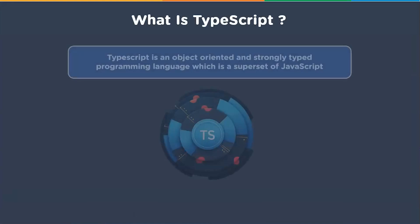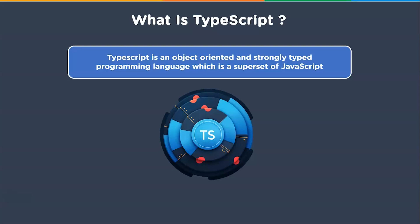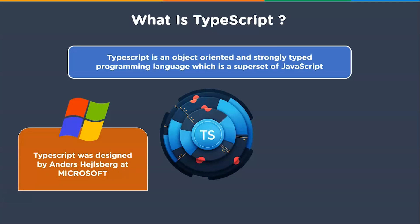What is TypeScript? TypeScript is an object-oriented and strongly typed programming language which is a superset of JavaScript. TypeScript code is converted to JavaScript, which can be executed anywhere JavaScript is supported — in a browser, Node.js, or any other application. TypeScript was designed by Anders Hejlsberg at Microsoft. The limitations of JavaScript for the development of large-scale applications led to the creation of TypeScript, due to the difficulty of working with complicated JavaScript code and demand for custom tooling.